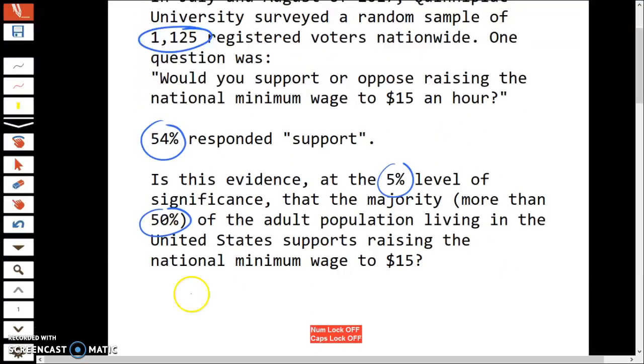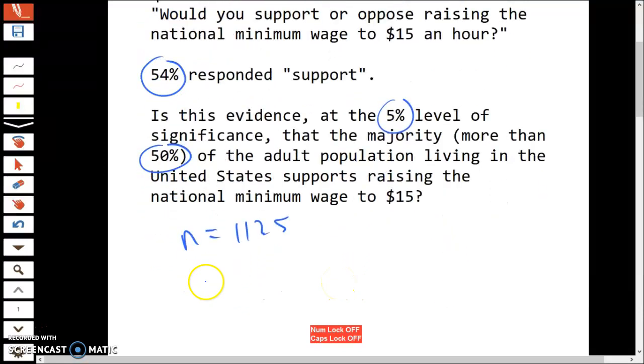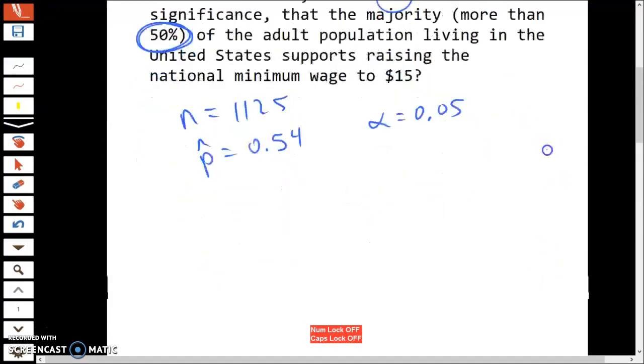First, let's make a note of a couple things. Sample size is 1,125. 54% is the sample proportion, 0.54. This is going to be the null hypothesis value. 5% is alpha, the level of significance. Let's go to the worksheet.